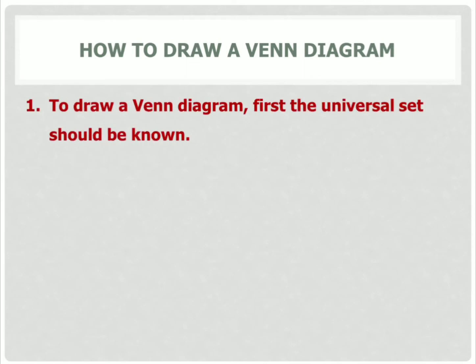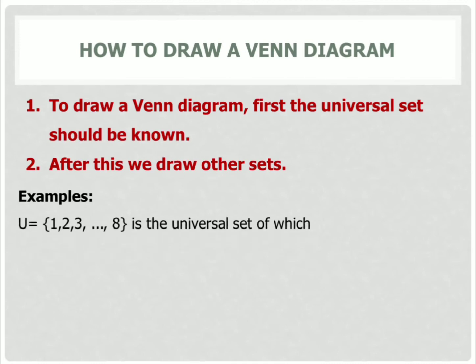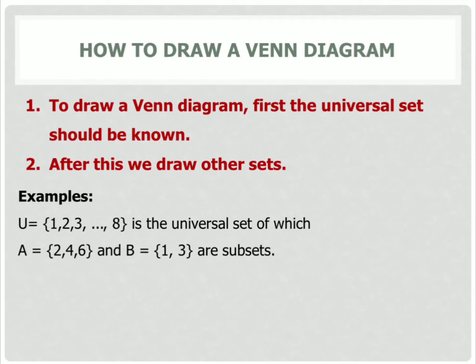Now, how can you draw a Venn diagram? To draw a Venn diagram, first the universal set should be known. After this, we draw the other sets. For this, we take an example. If the universal set U equals to {1, 2, 3, 4, 5, 6, 7, 8}, and two subsets of this universal set are A and B.